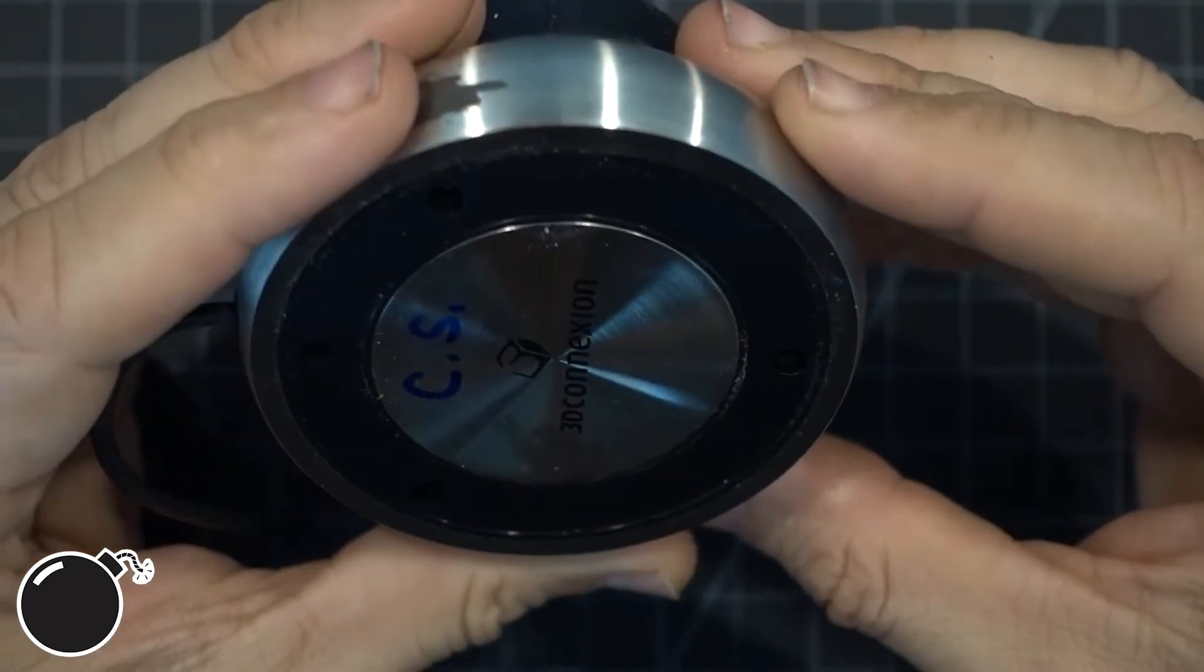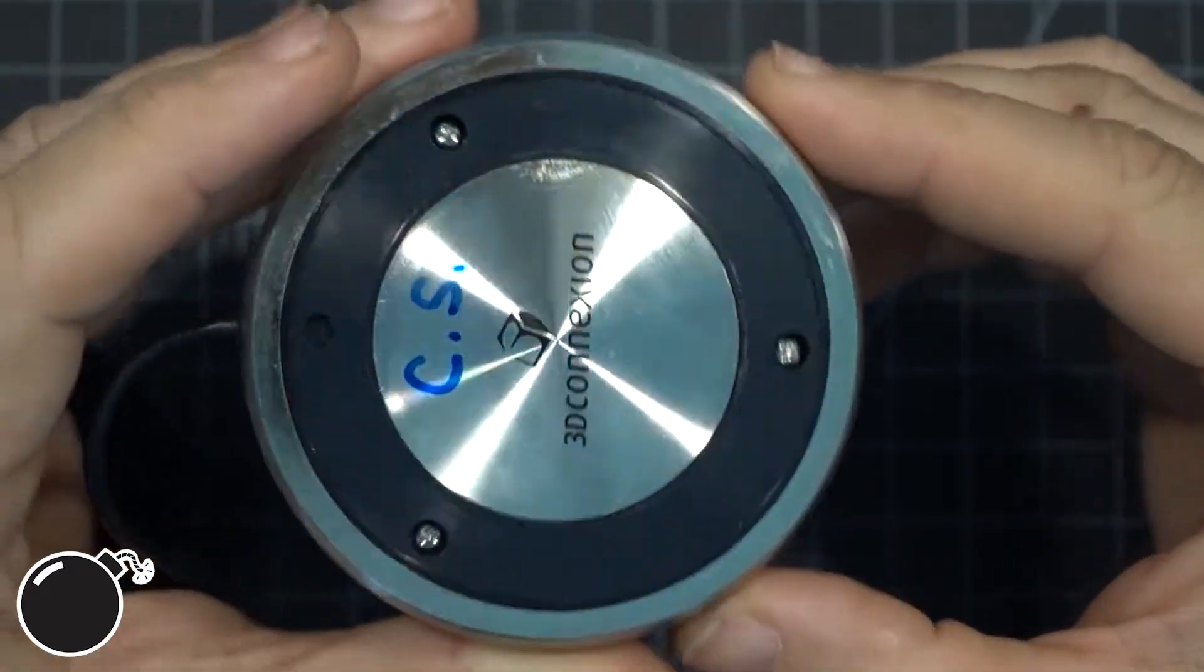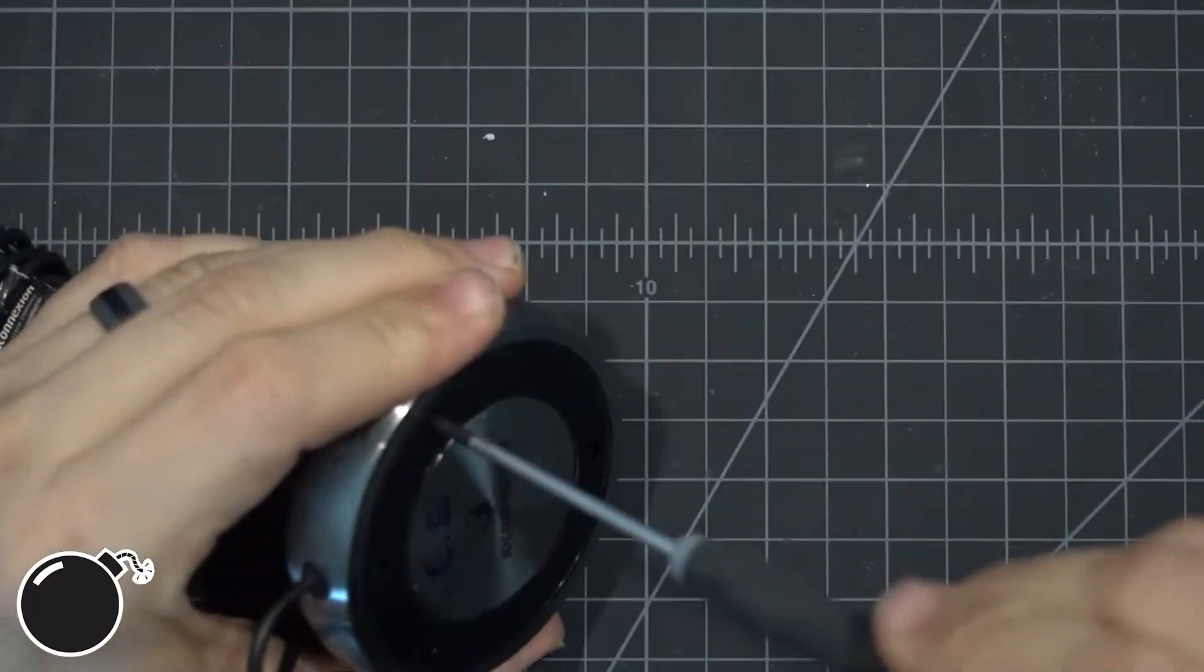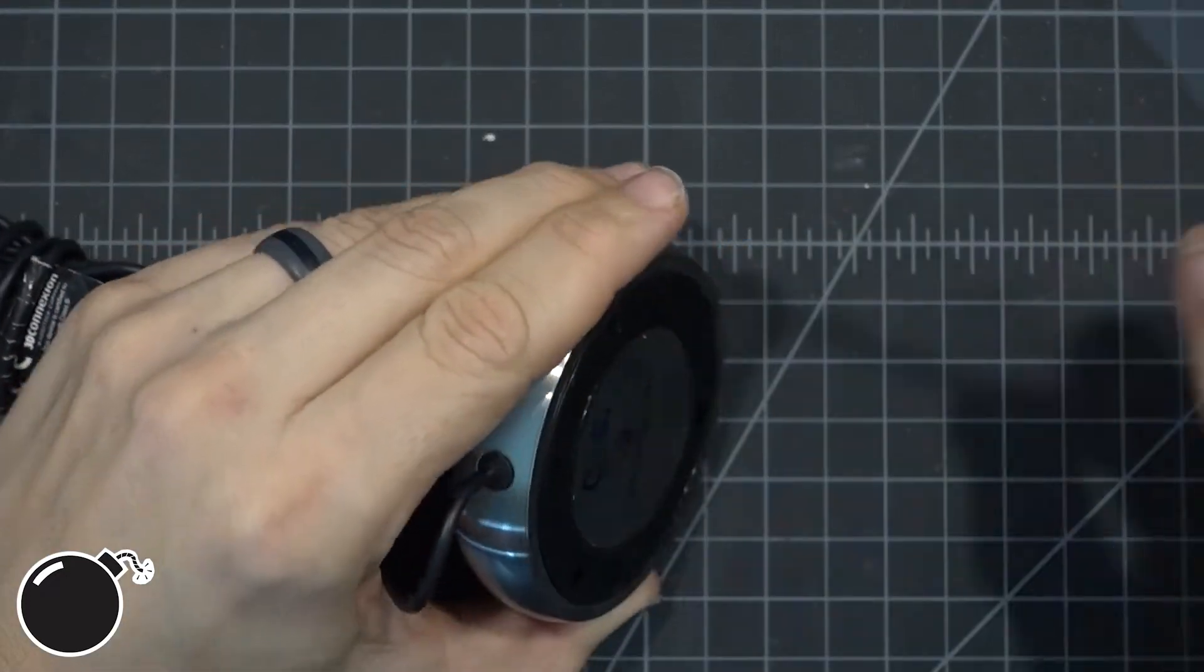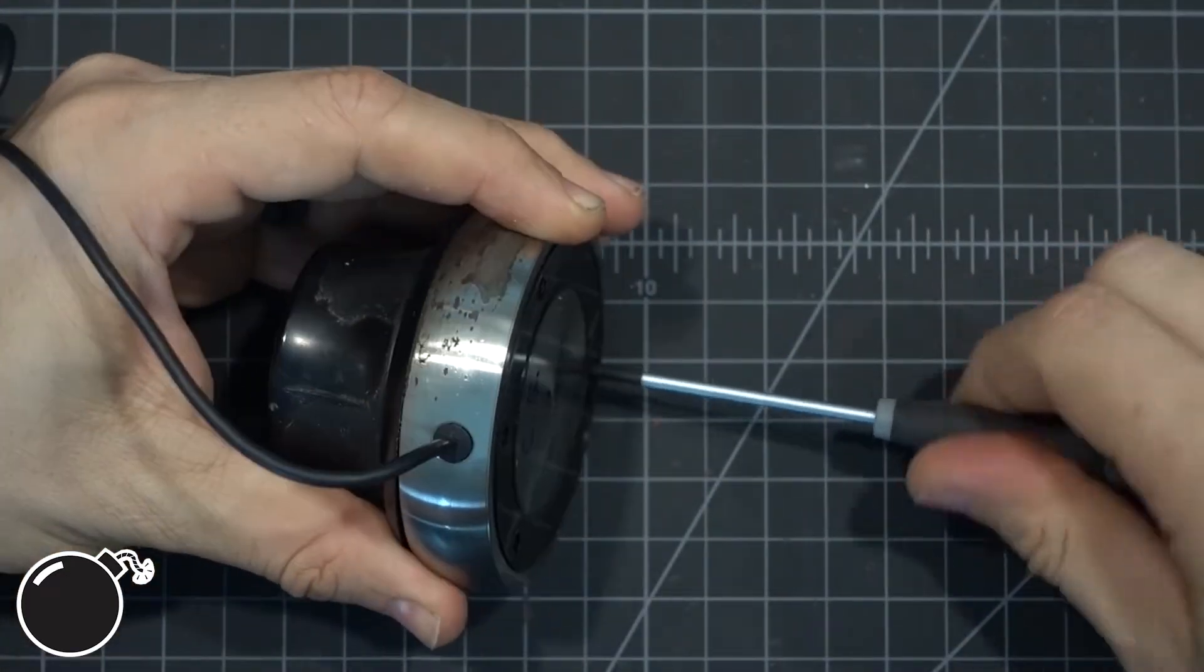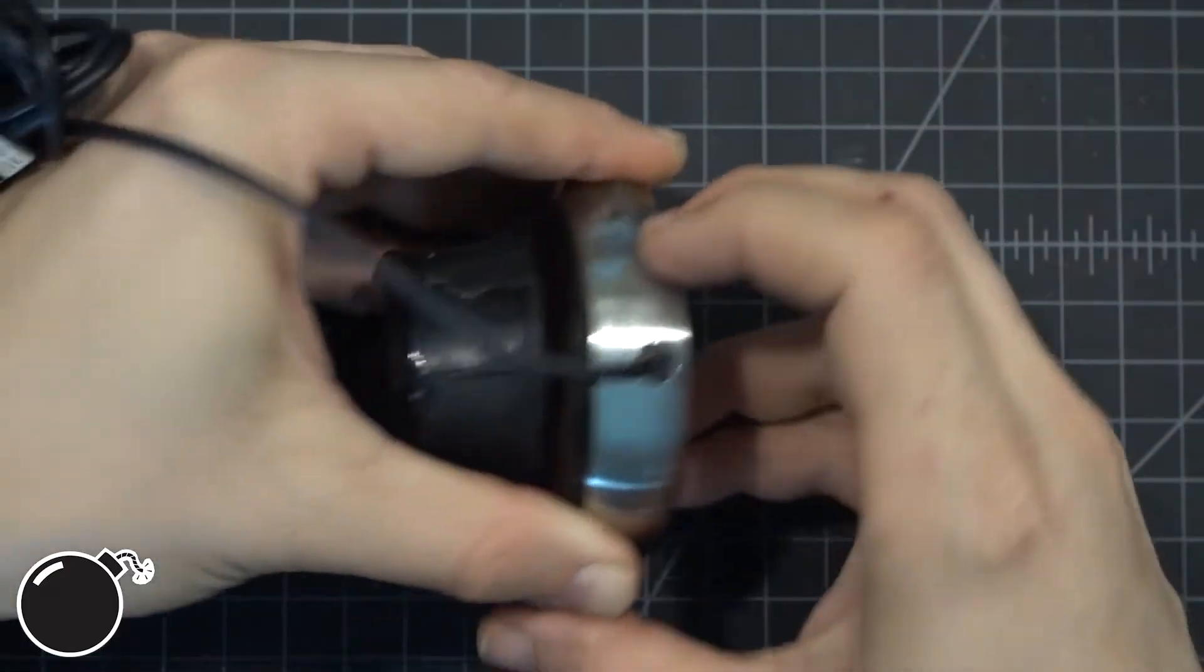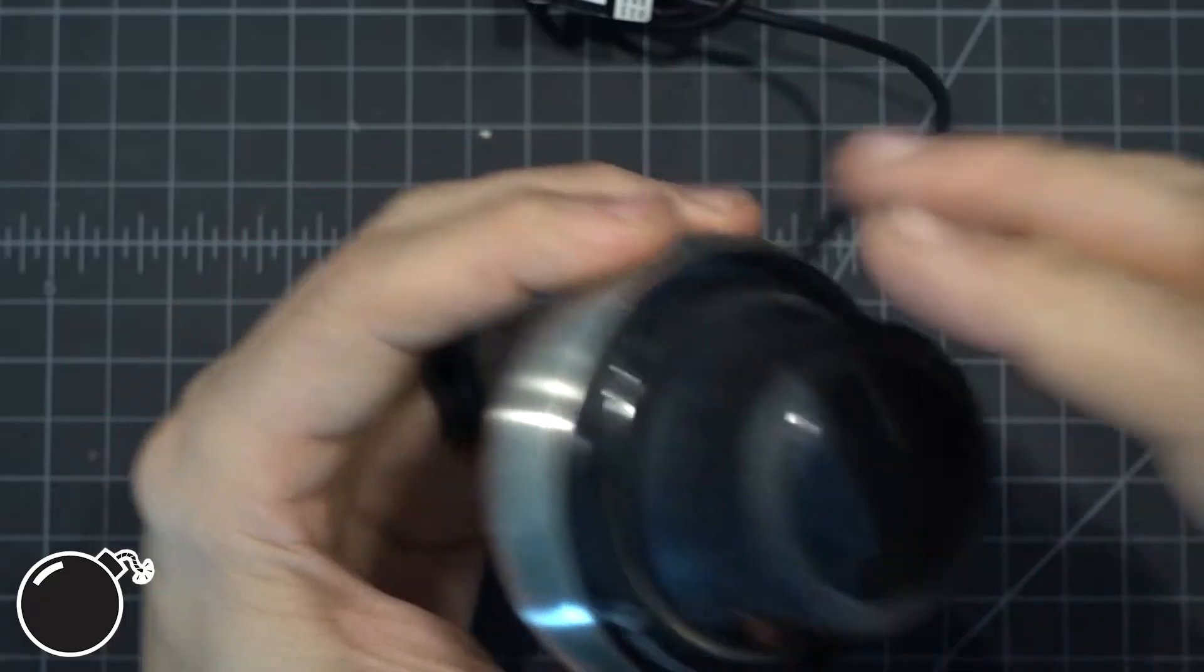All right. Here you go. And they are just Phillips screws. They're not some Torx or proprietary head, which is nice. It looks like three of the same screw, which is nice. All right. Let's see what's going on in here.